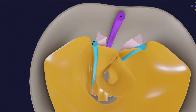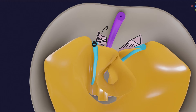Right now, the intermediate mesoderm is attached to the lateral plate mesoderm, and the paraxial mesoderm is also attached to the intermediate mesoderm. What will happen is that the paraxial mesoderm will separate and go on to form the vertebral column — divided into sclerotome, dermatome, and myotome forming components of skin and muscles. Also, the intermediate mesoderm gets separated from the lateral plate mesoderm.